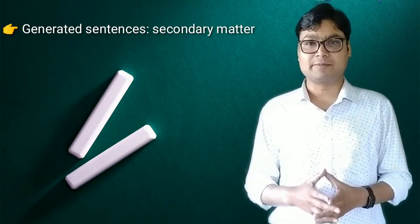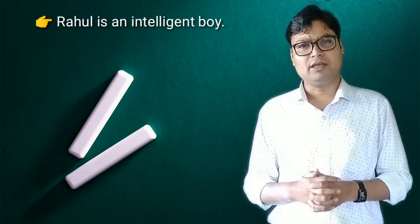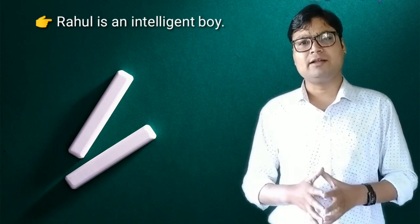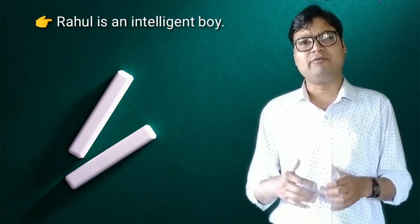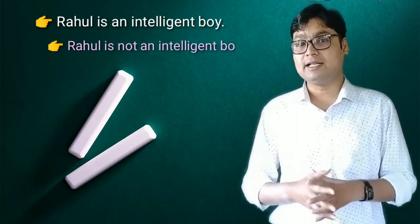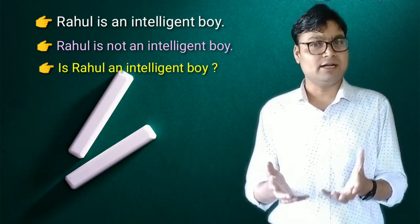Those generated sentences were called secondary matter. Consider this example: 'Rahul is an intelligent boy.' If we want to frame other sentences using this prototype, it could be framed in a negative way — 'Rahul is not an intelligent boy' — or in an interrogative way — 'Is Rahul an intelligent boy?' So similarly, thousands of sentences could be framed using a single prototype sentence.